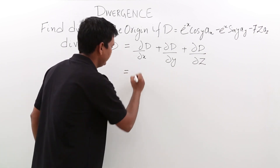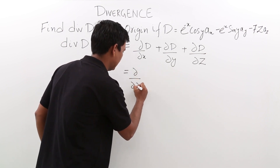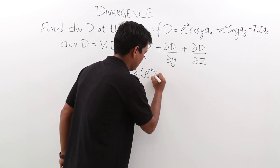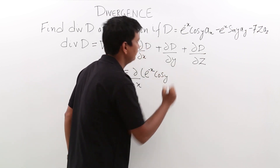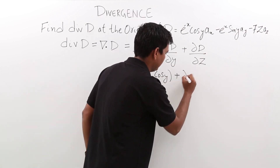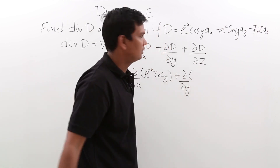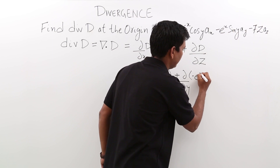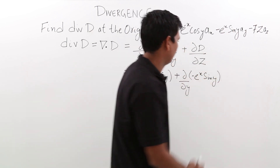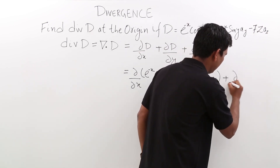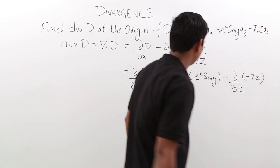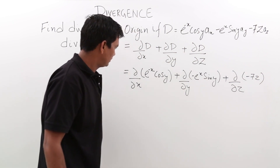So it will be del/del-x of (e to the power minus x cos y) plus del/del-y of (minus e to the power x sin y) plus del/del-z of (minus 7z).